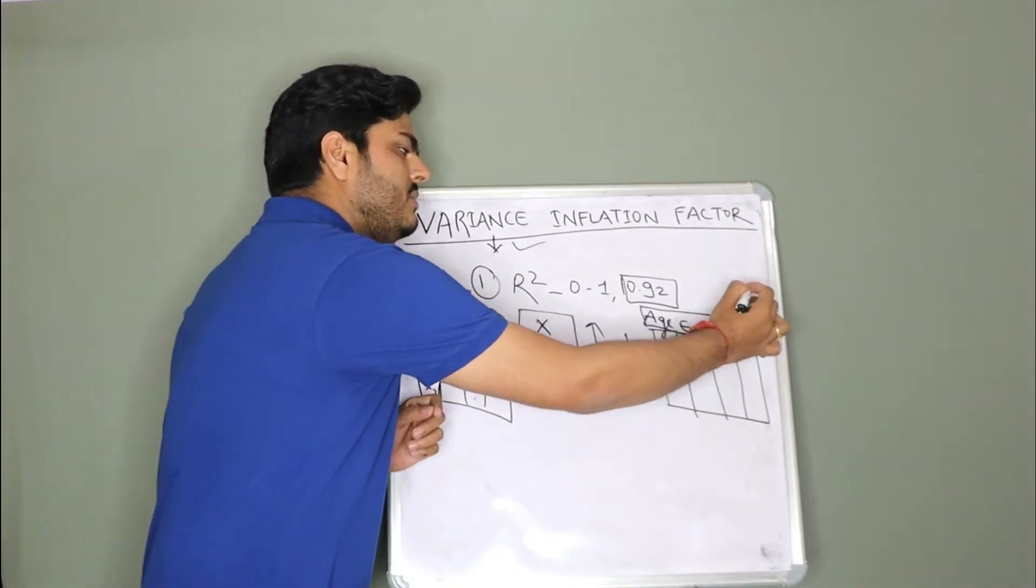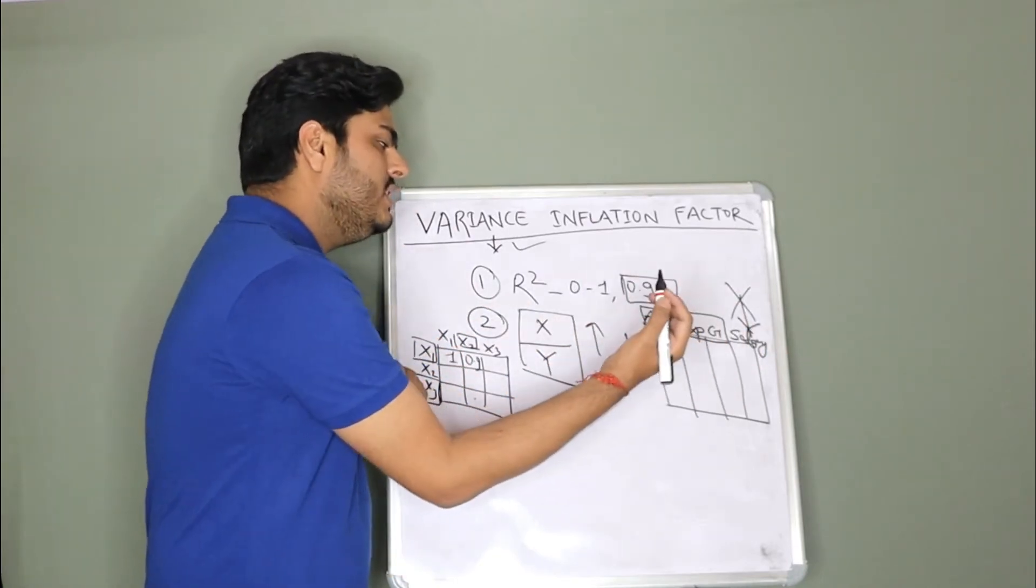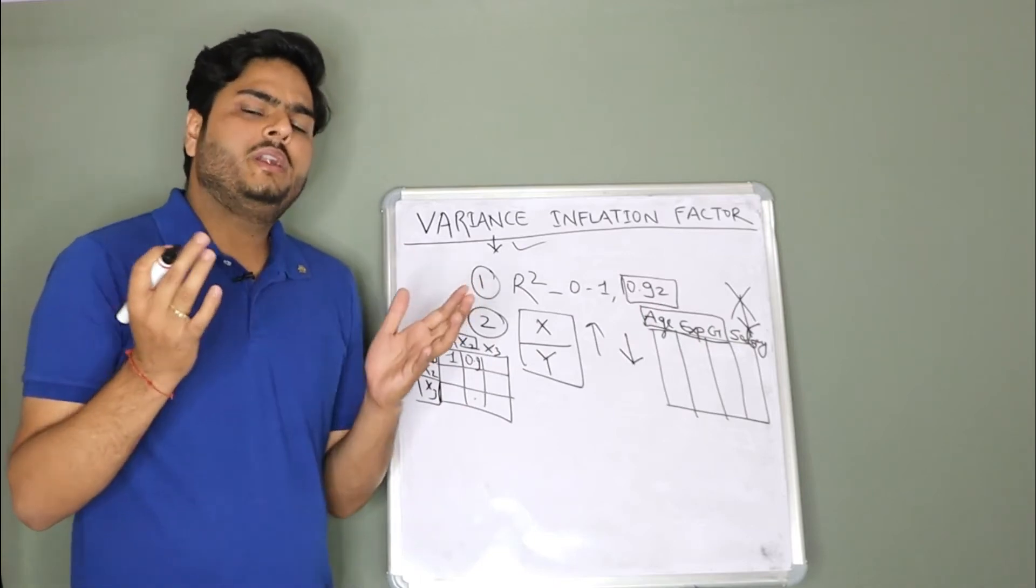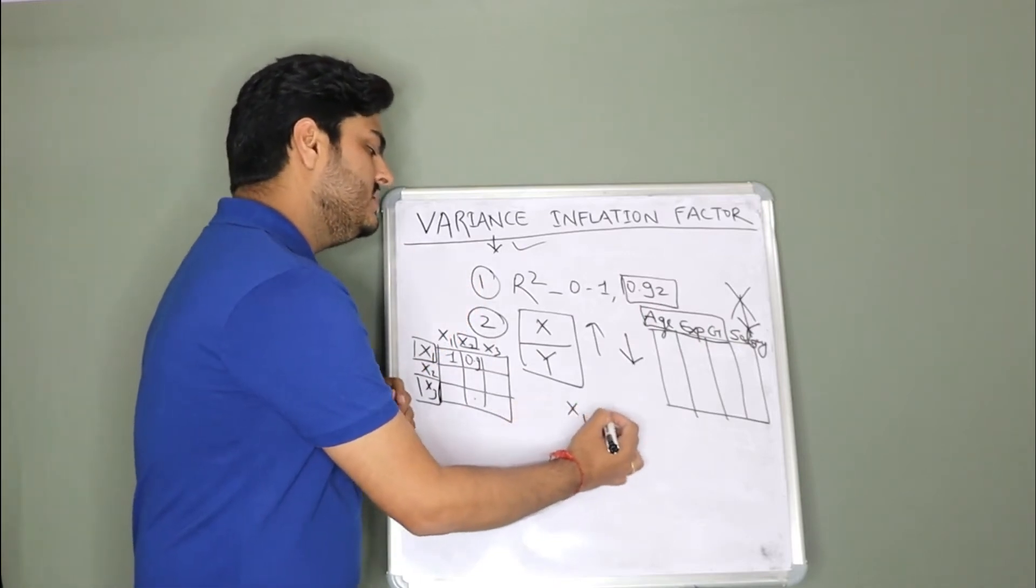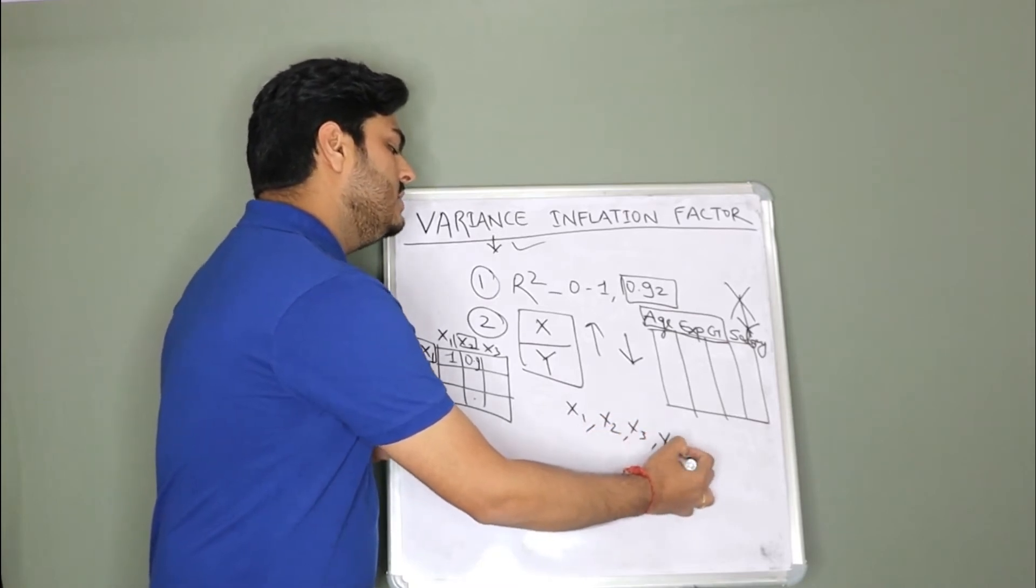So what will happen in VIF is, forget your target variable for a moment. Forget your target variable. Let us say in the independent variable, you have five independent variables. So let's say you have five variables x1, x2, x3, x4 and x5.